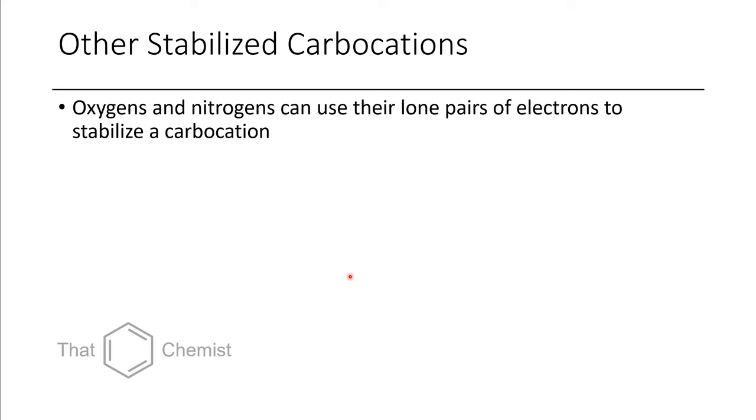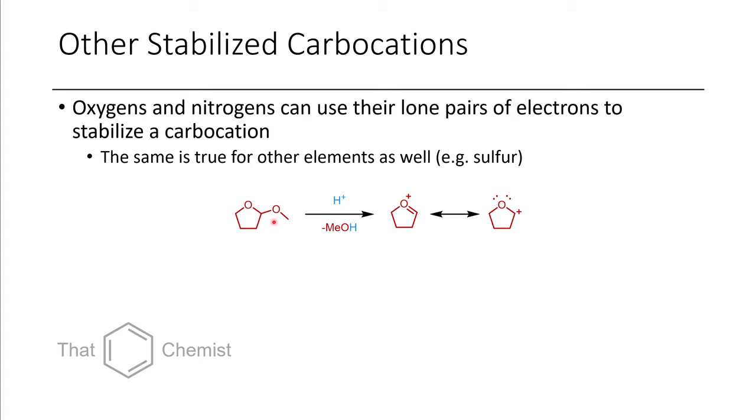So there's other types of carbocations that can be synthesized. They tend to be stabilized by heteroatoms that can donate electron density. So while oxygen and nitrogen are cases that we will most often see, it's also possible to see the same thing for elements such as sulfur, phosphorus, etc.